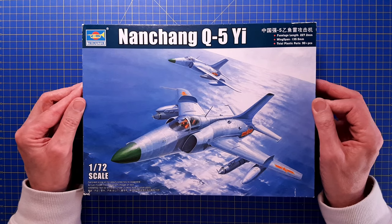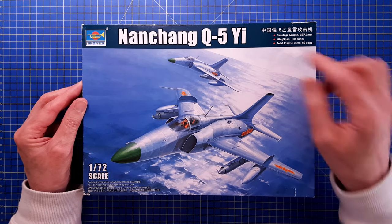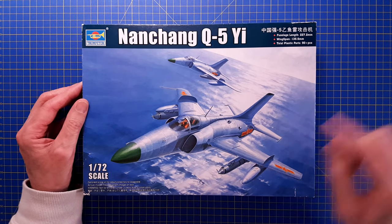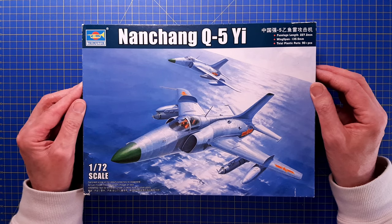The NATO reporting name is FANTAN, and this specific version, the G version, is a torpedo attacker or a dedicated naval ground attack aircraft.